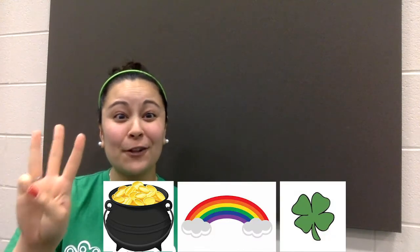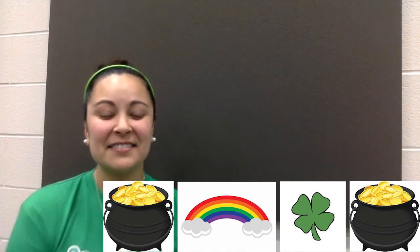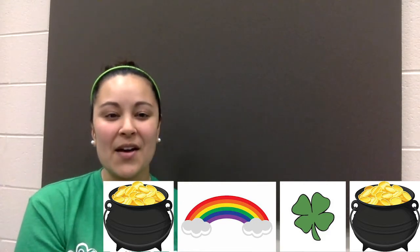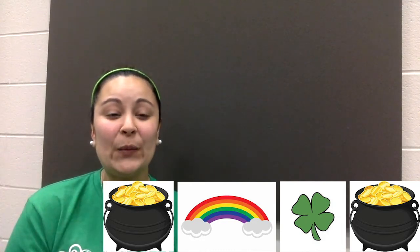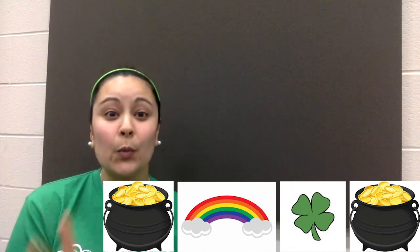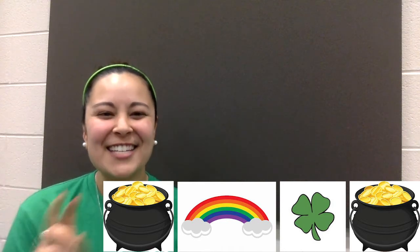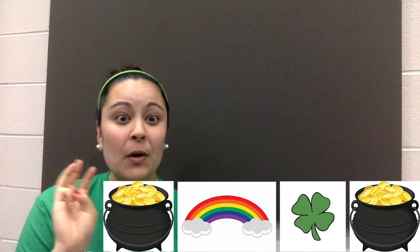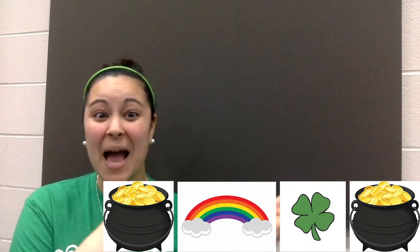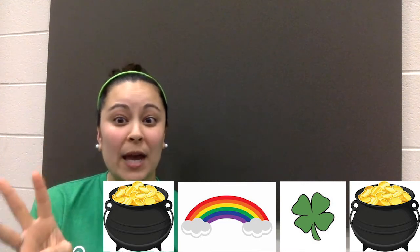Let's do this one: gold, rainbow, four-leaf clover, gold. Put these pictures down — pause if you need time to set it up. Ready, set, here we go: gold, rainbow, four-leaf clover, gold. Let's do that one again — four-leaf clover is kind of fast. Ready, set, here we go: gold, rainbow, four-leaf clover, gold. Now let's go backwards: gold, four-leaf clover, rainbow, gold. How'd you do? Good.